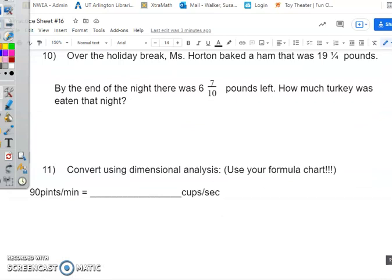Dimensional analysis. We have 90 pints per minute. We want to change it into cups per second. So we're going to start with what we're given. I'm given 90 pints per minute.